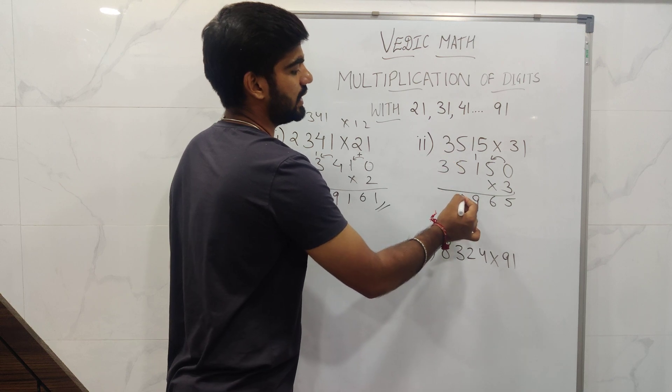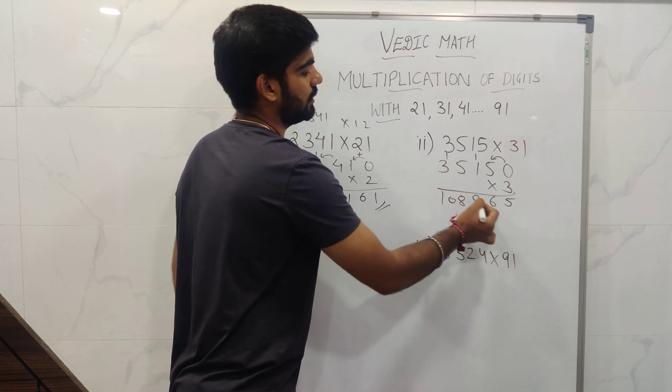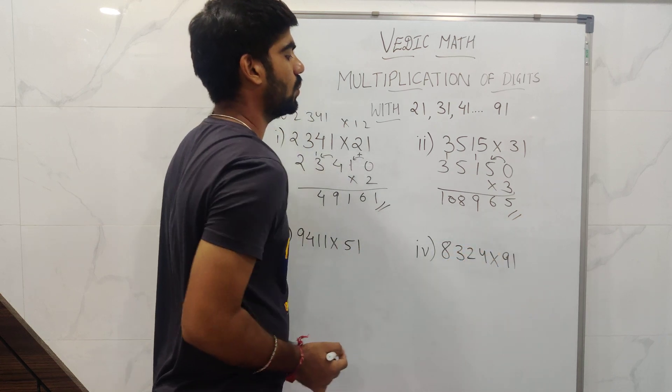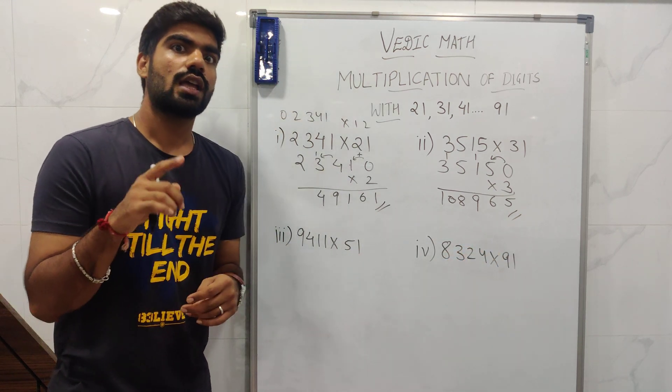3 times 5 is 15, 15 plus 3 is 18. The answer is 1089665. Perfect.